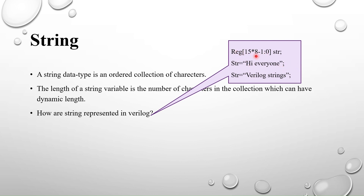If the reg width is greater than the string width, it will add zeros to the leftmost (MSB) side. If the reg width is smaller than the string width, the leftmost bits will be truncated and you will lose some characters. In SystemVerilog, there is no such problem — you can store any number of characters with no limit, depending on the simulation environment.